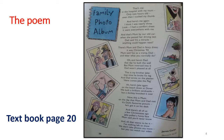Fourth stanza: 'They asked mum and dad in fancy dress — it was Christmas '92. Mum said go as a tramp, dad, and wear what you normally do.' So the mother told the father to dress as a tramp, suggesting he normally dresses that way.